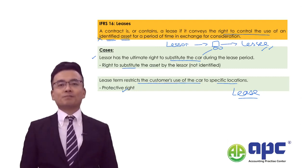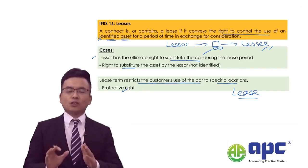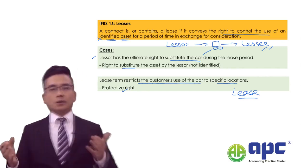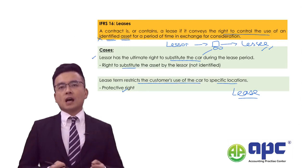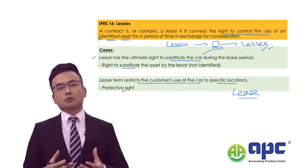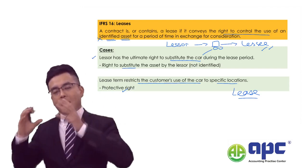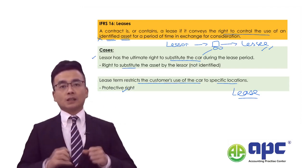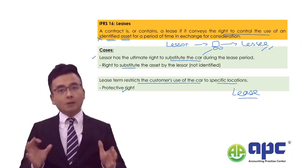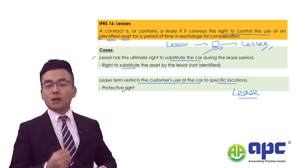If we have a substitute right, this is not a lease. But if we have a protective right, this is still a lease contract. There is no point in the exam dumping knowledge about the initial and subsequent measurements of the right-of-use asset and lease liability, the lease term, the discount rate, or the disclosure and presentation requirements.